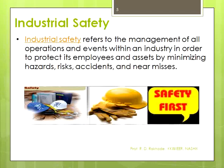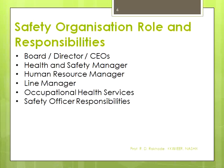Industrial safety refers to the management of all operations and events within an industry in order to protect its employees and assets by minimizing hazardous risks, accidents, and near-misses. In short, industrial safety is about protecting workers and employees to minimize accidents. There are safety organization roles and responsibilities at different levels, which may vary from company to company.